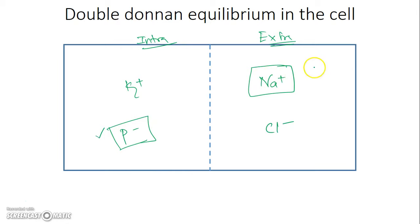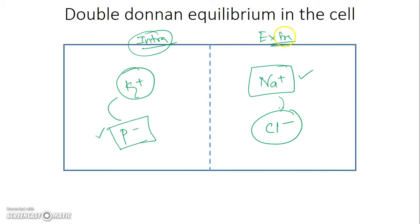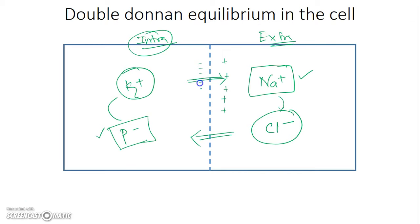So there are two impermeable ions on both sides. The protein retains all the potassium in the intracellular compartment, and sodium retains chloride in the extracellular compartment. Thus, potassium and phosphate are at high concentration intracellularly, while sodium and chloride are concentrated extracellularly. The potassium concentration gradient drives it outward, and the chloride concentration gradient drives it inward. When potassium moves out without a negative ion, it accumulates positive charge extracellularly and induces negativity intracellularly.